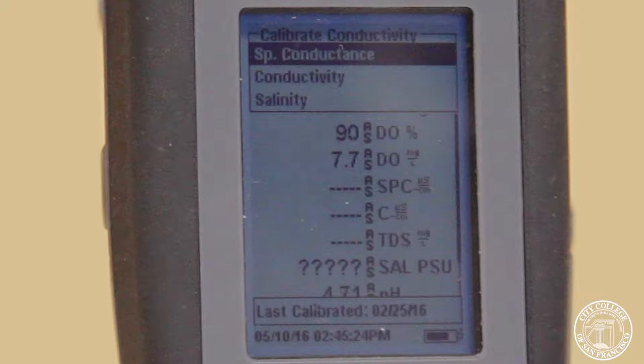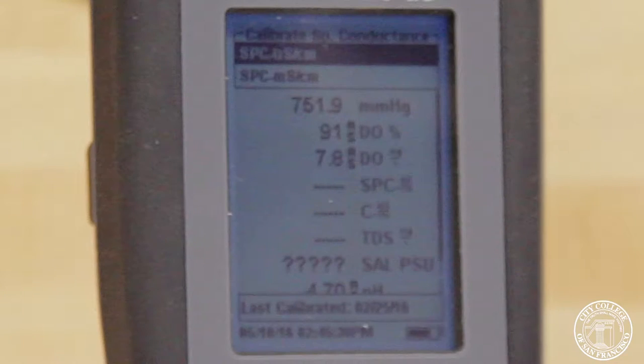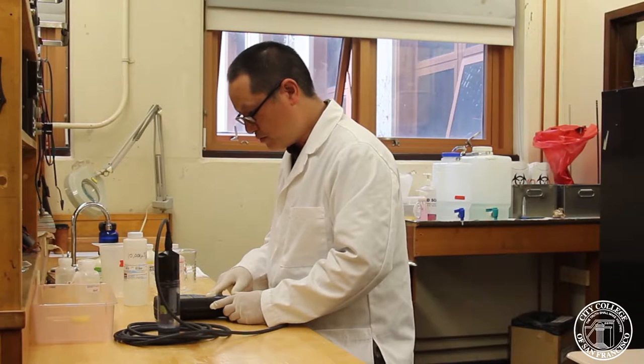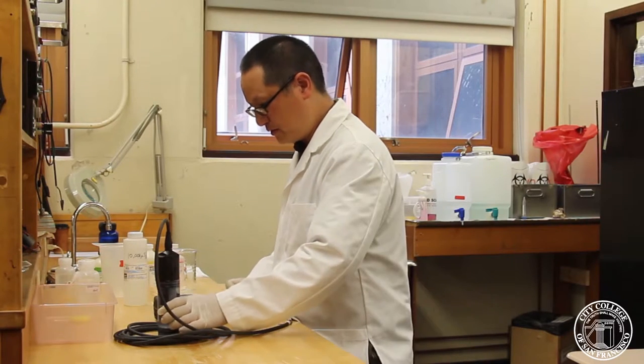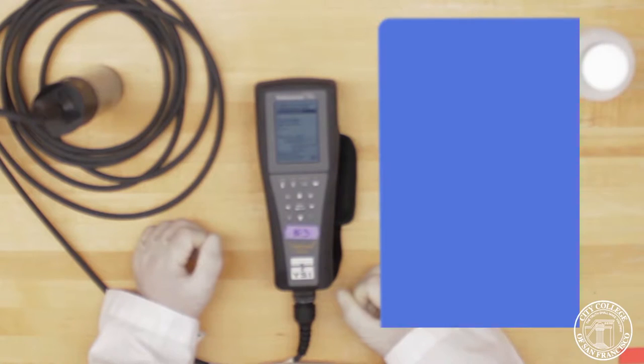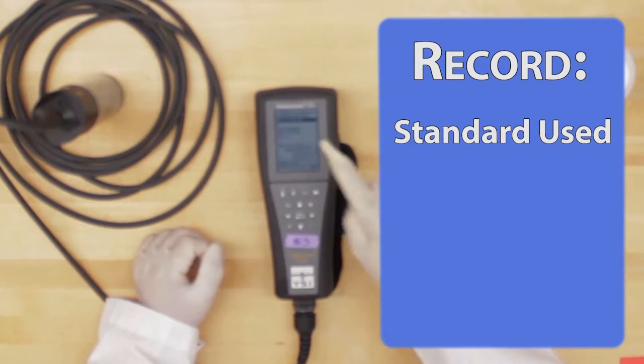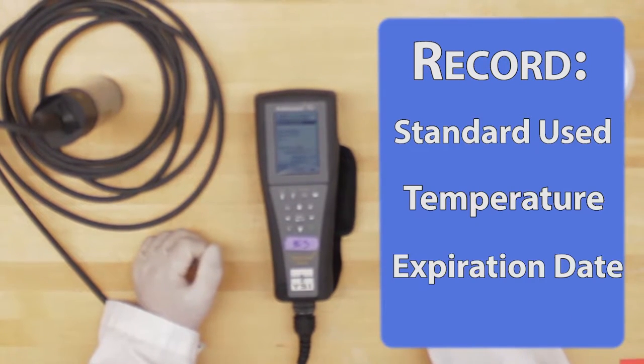Press enter, and we're going to check for specific conductance. It's going to ask us for the units, and we're going to select specific conductance in micro Siemens per centimeter. As you can see, we are now calibrating at close to 10,000. What we want to do is record the actual readings and also the temperature.